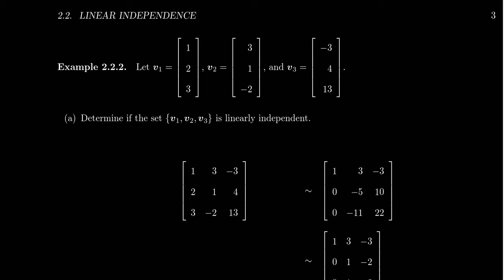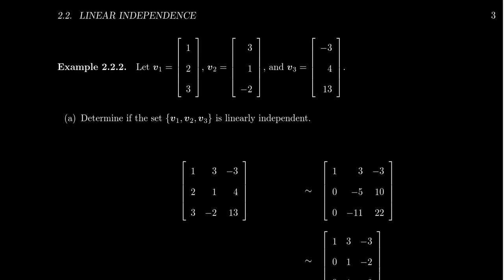Consider the vectors v1 = (1, 2, 3), v2 = (3, 1, -2), and v3 = (-3, 4, 13). We want to determine whether or not this set of vectors is linearly independent.